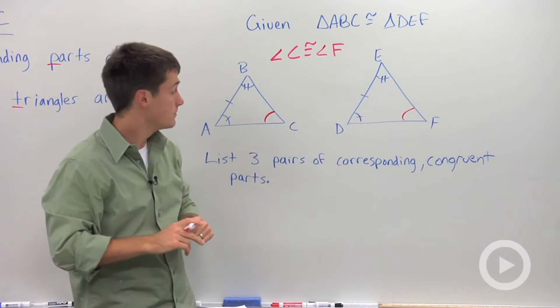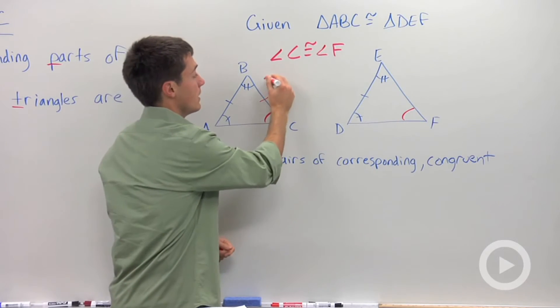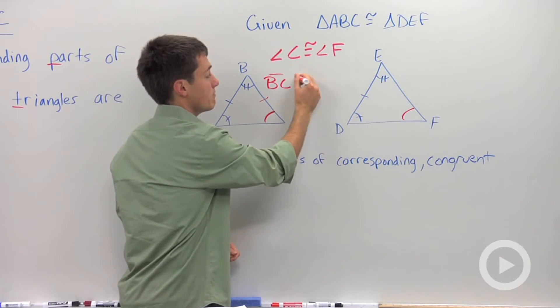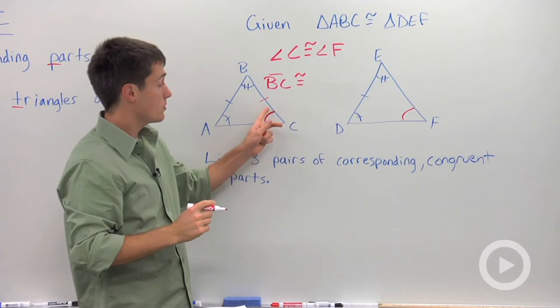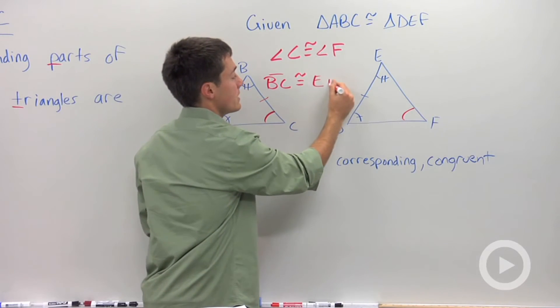It asks for two more pairs. Let's talk about this side, BC. So I'm going to say line segment BC is congruent to its corresponding segment in the other triangle, which is EF.